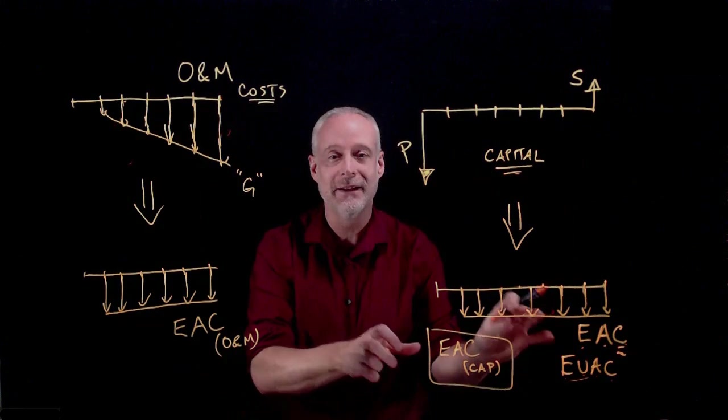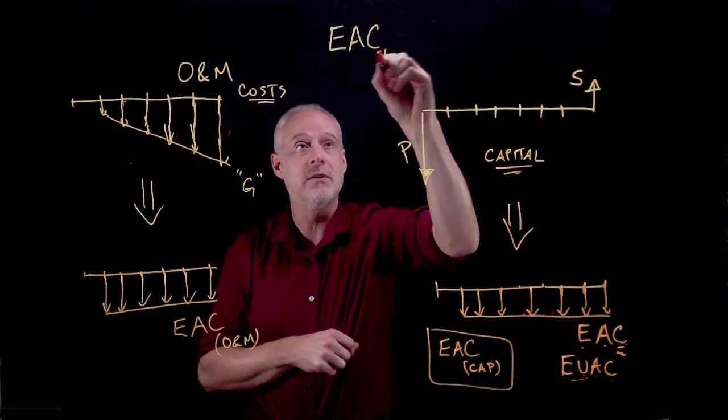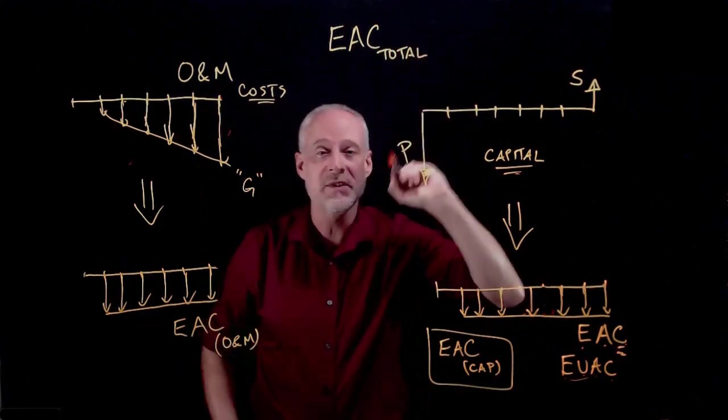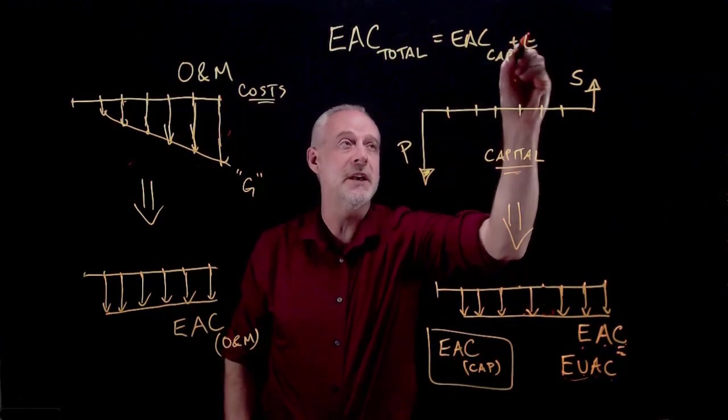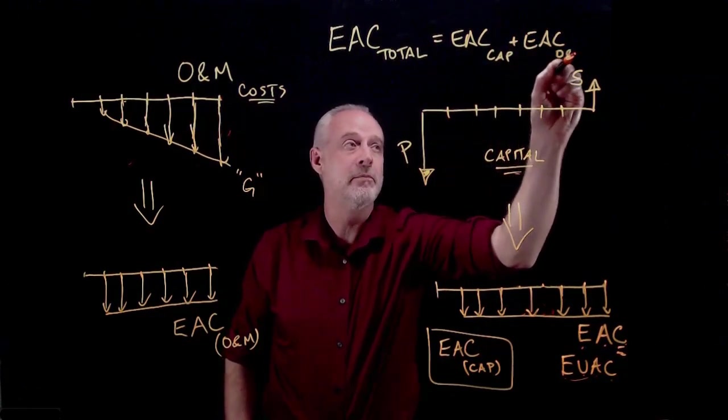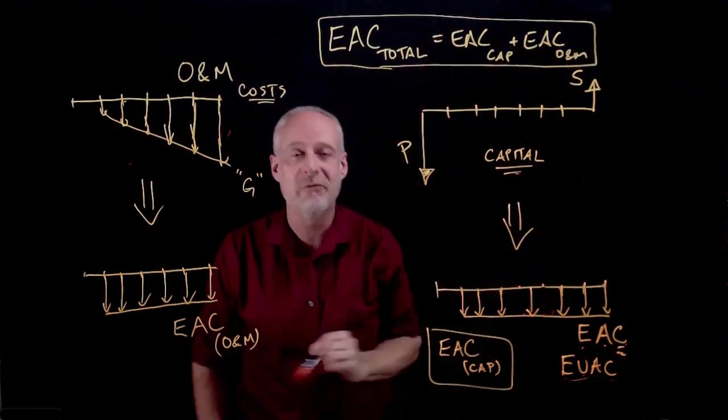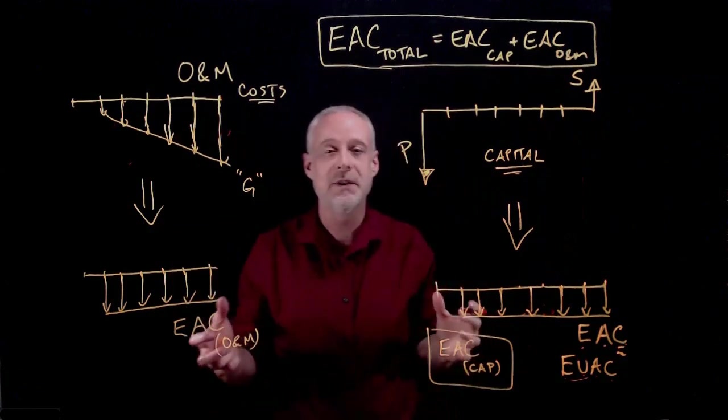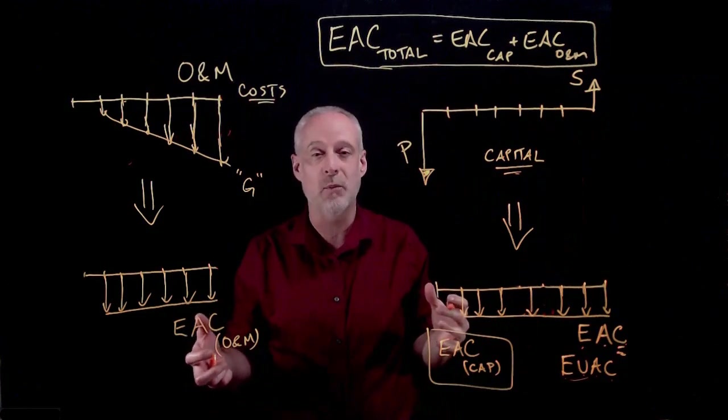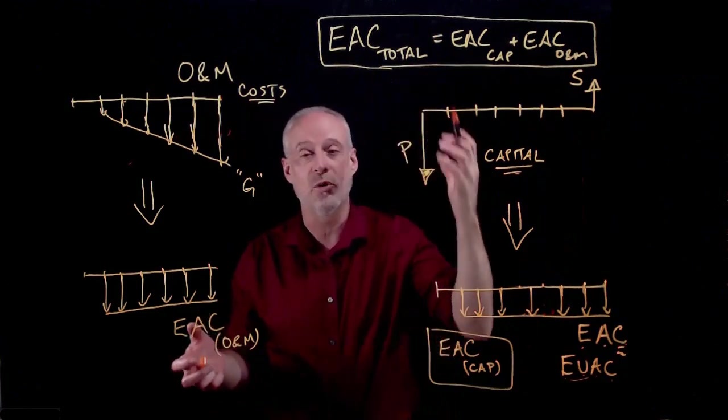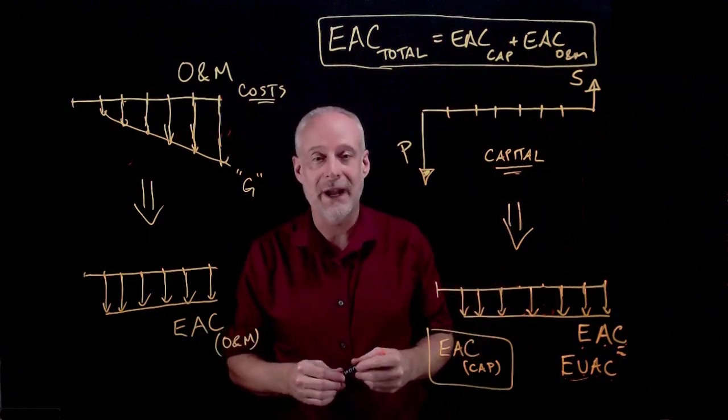So, where we're headed in this chapter is to find the EAC total. And the EAC total is simply the EAC cap plus the EAC O and M. And we're going to need all of those time value of money skills that we developed in the first portion of this course in order to be able to come up with the equivalent annual cost total for the purchase of a particular asset.